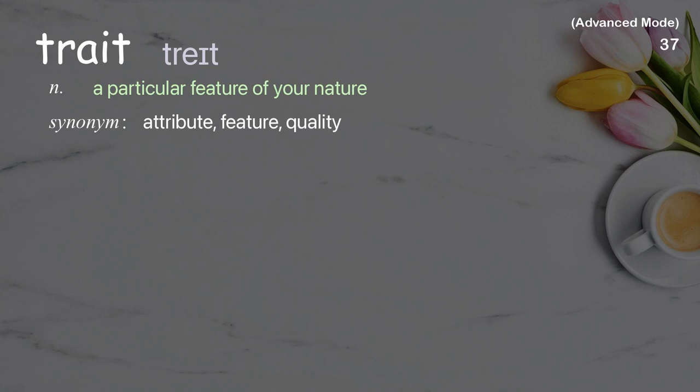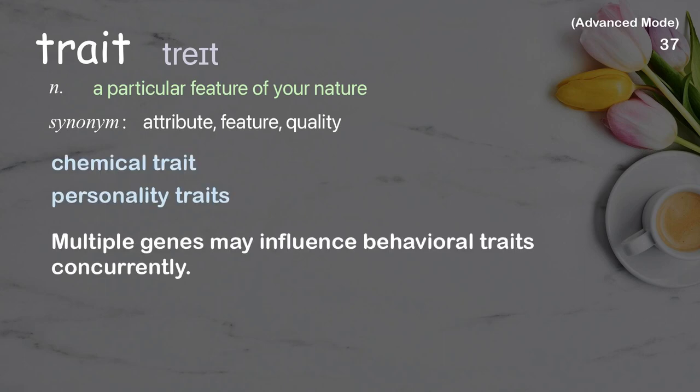Trait: A particular feature of your nature. Examples: chemical trait, personality traits. Multiple genes may influence behavioral traits concurrently.